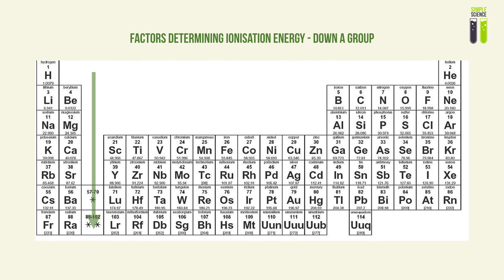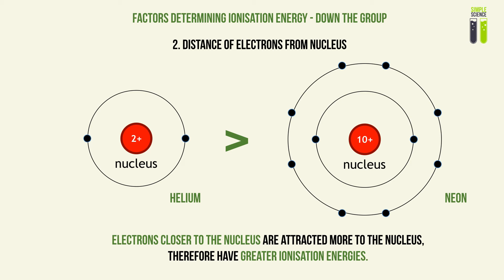Now let's look at how the ionization energy varies down the group. Taking two atoms from the noble gas series — helium and neon — the outer electron for the neon atom will be further away from the nucleus compared to the outer electron of the helium atom. The further the distance between two attracting charges, the weaker their attraction, as proven by the inverse square force law, which states that force is inversely proportional to the square of distance. Therefore, electrons closer to the nucleus are attracted more strongly, requiring greater ionization energy to remove them.